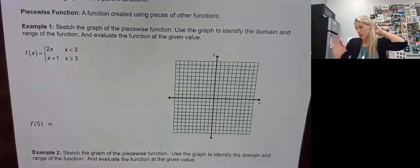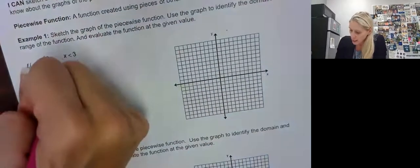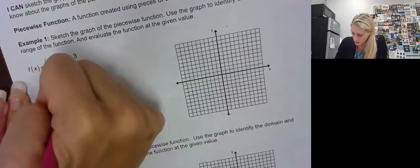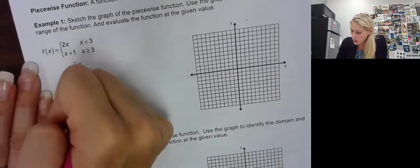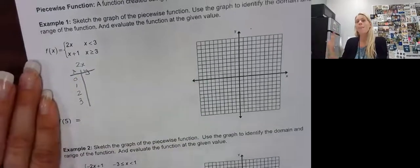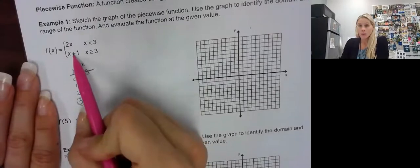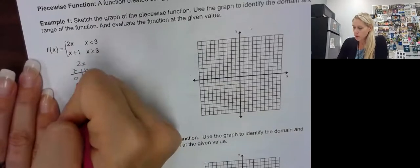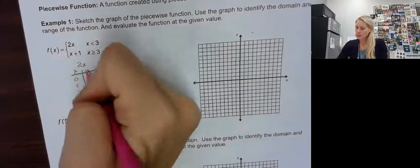So how do we graph that? I'm going to start with a strategy that will work all the time. I'll take my first function 2x and put my x and y table. I want x is less than 3, so I could do 0, 1, 2. Even though I don't want 3 in there, I'm going to include it just so I know where it goes, because this would be an open circle — we don't know if it's going to connect or not. So now I'm going to plug in: 2 times 0 is 0, 2 times 1 is 2, 2 times 2 is 4, and 3 times 2 is 6.